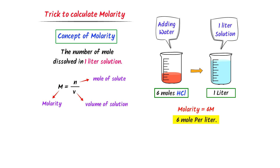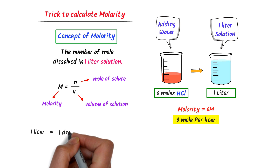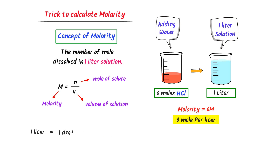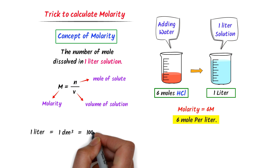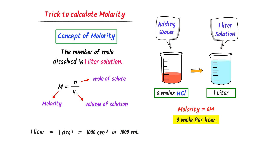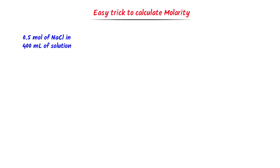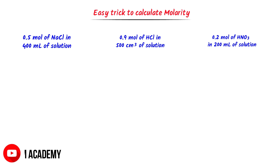Also note that 1 liter is equal to 1 dm³, and 1 dm³ is equal to 1000 cm³ or 1000 milliliter. Remember all these important points. Now, how can we calculate molarity using a super easy trick? Consider these numerical problems of molarity.